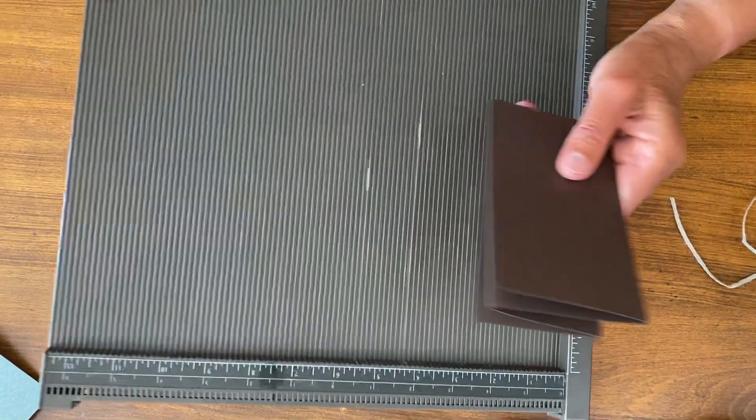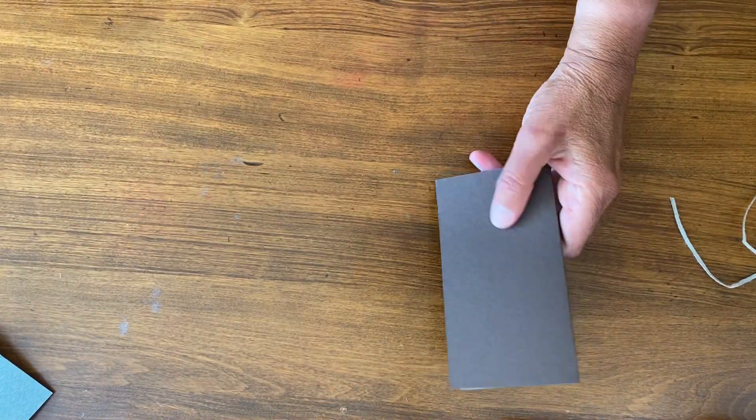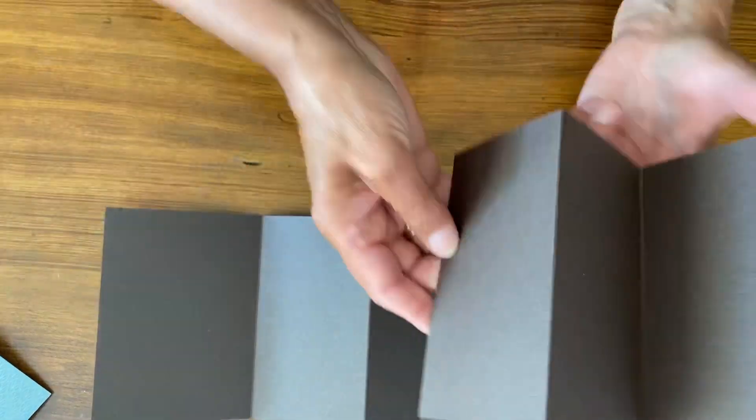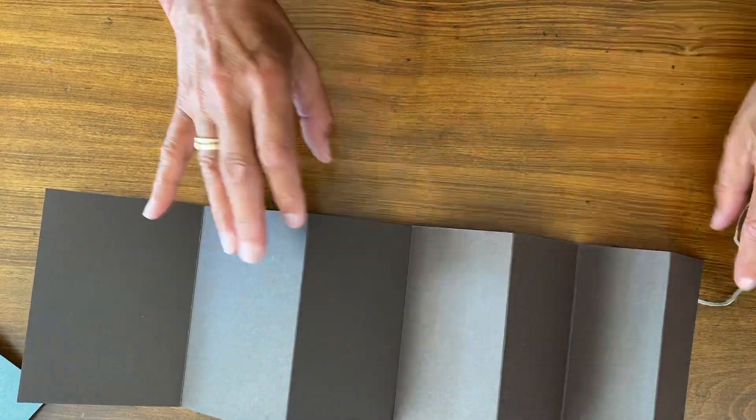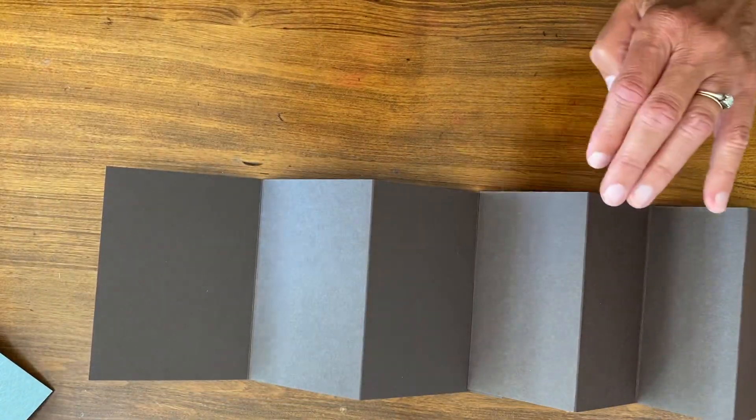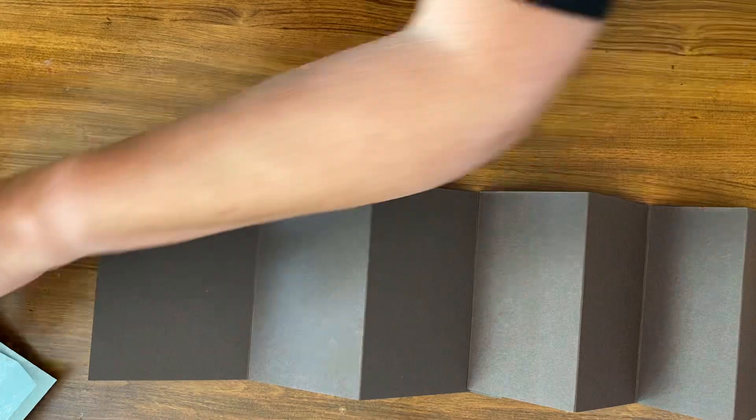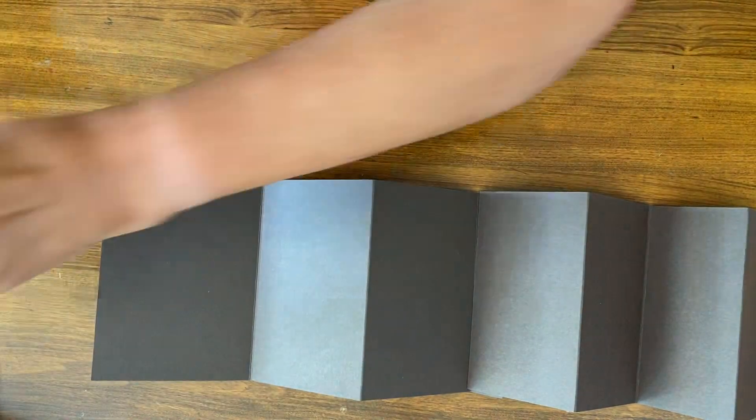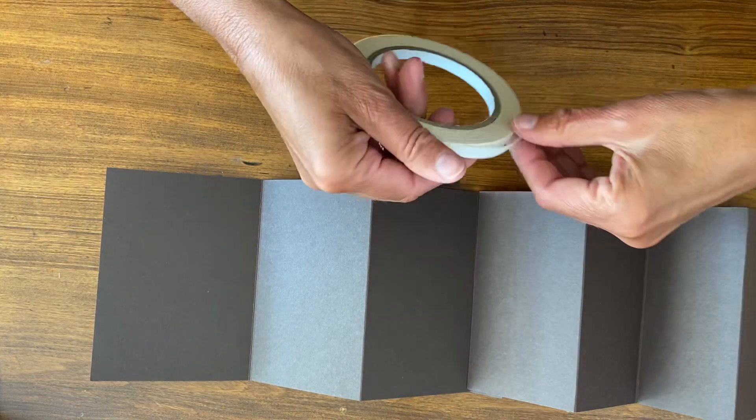So there are my pieces and you will see then when I flip this over this is how it's going to make the accordion. So they're going to attach right there. To attach it I am going to use some tear and tape. Anything with a strong adhesive would work.